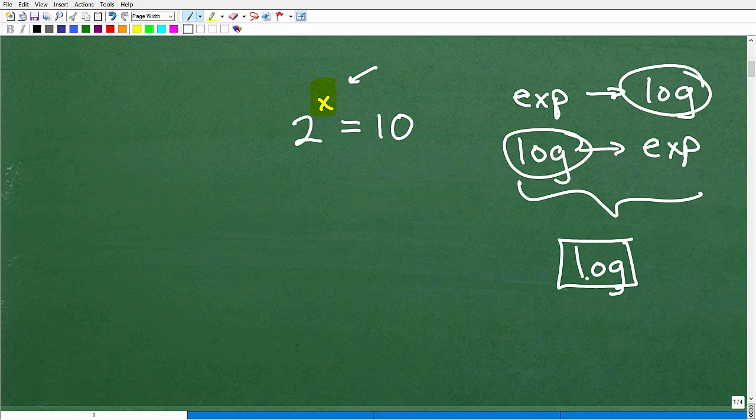So this is a logarithm. We call this a common logarithm. Then you should have this other little button called L-N. This is also a logarithm. Now, this logarithm is what we call log base 10, or the common logarithm.